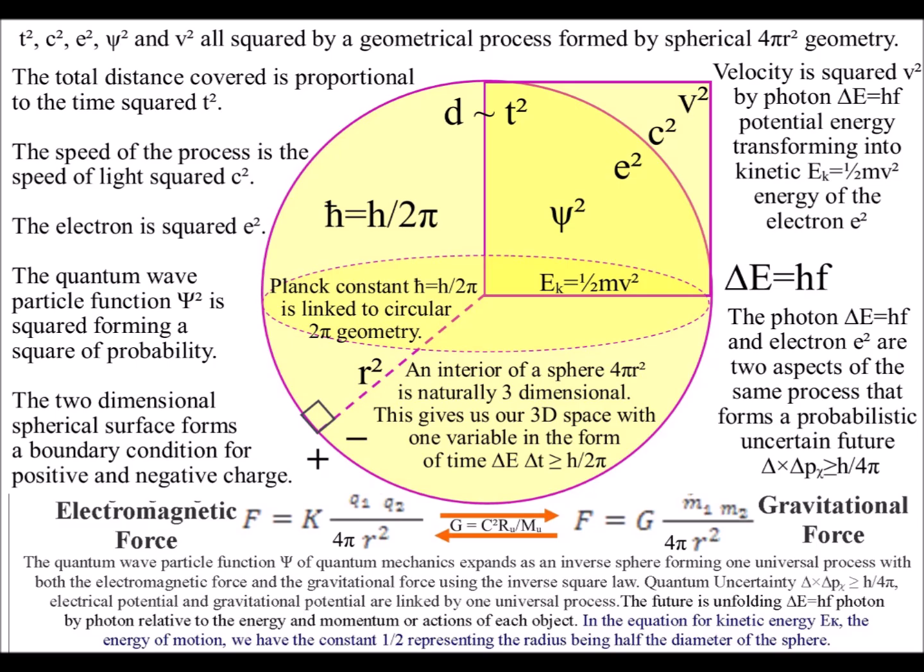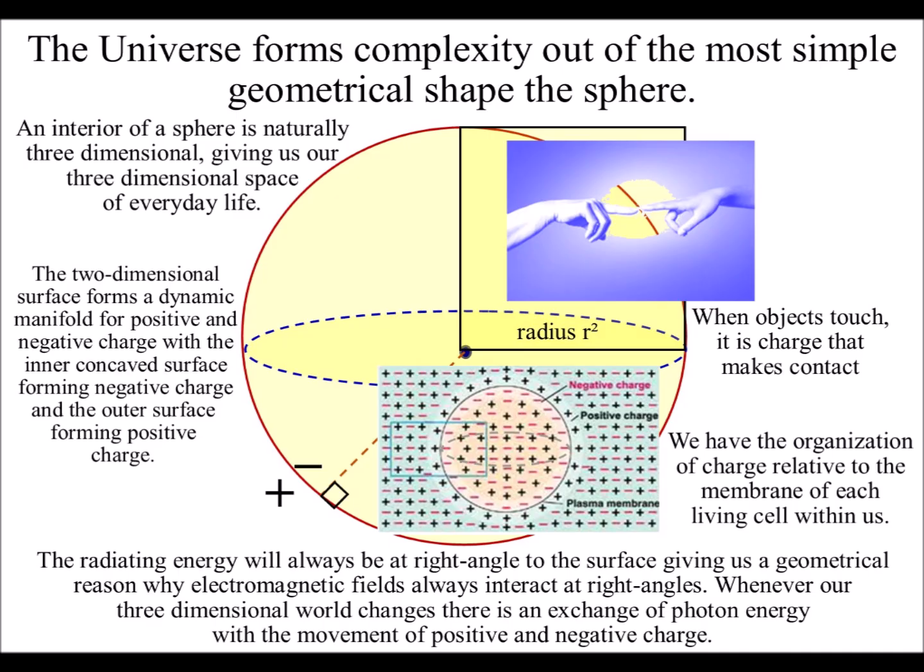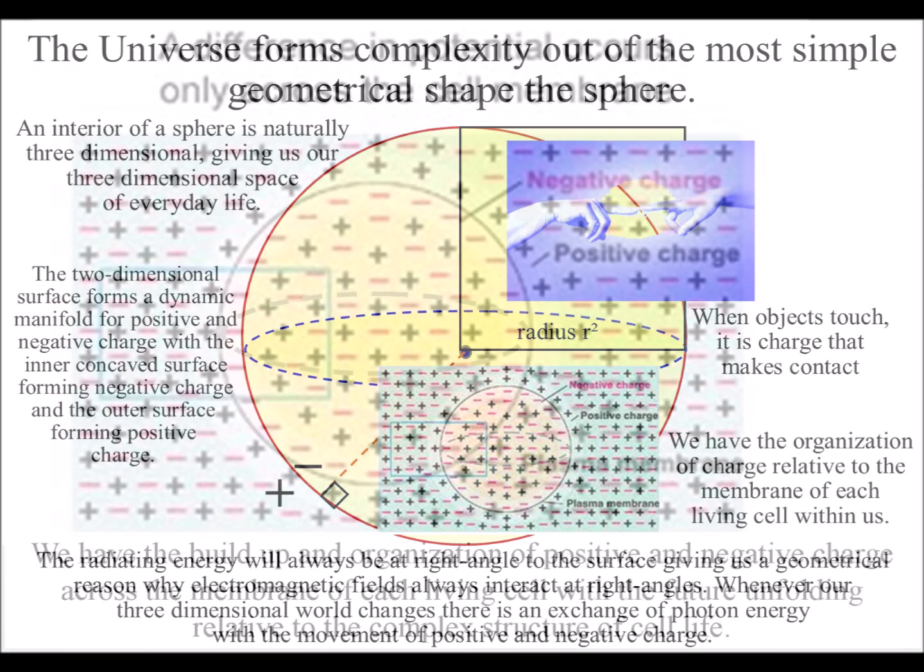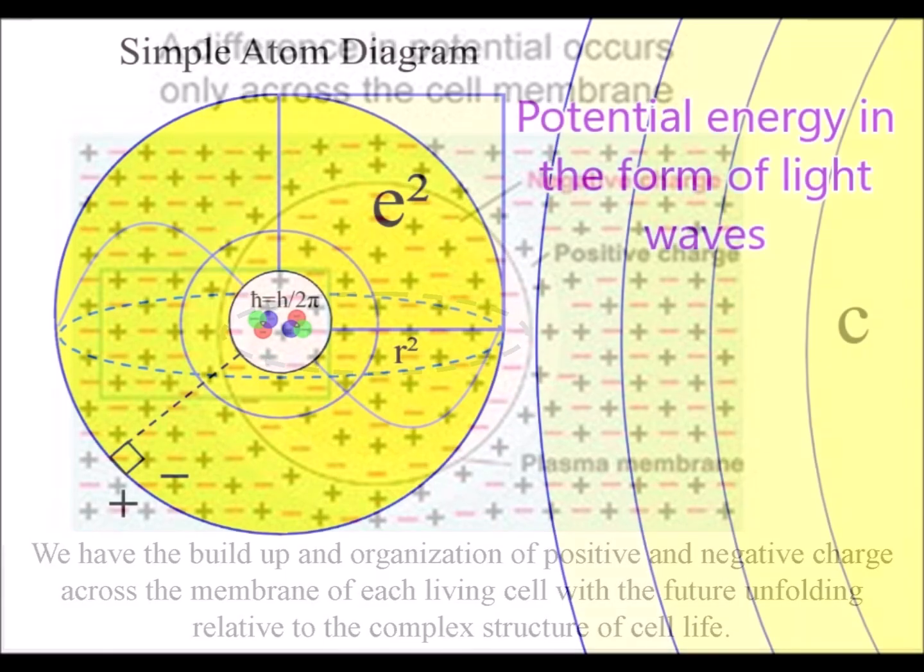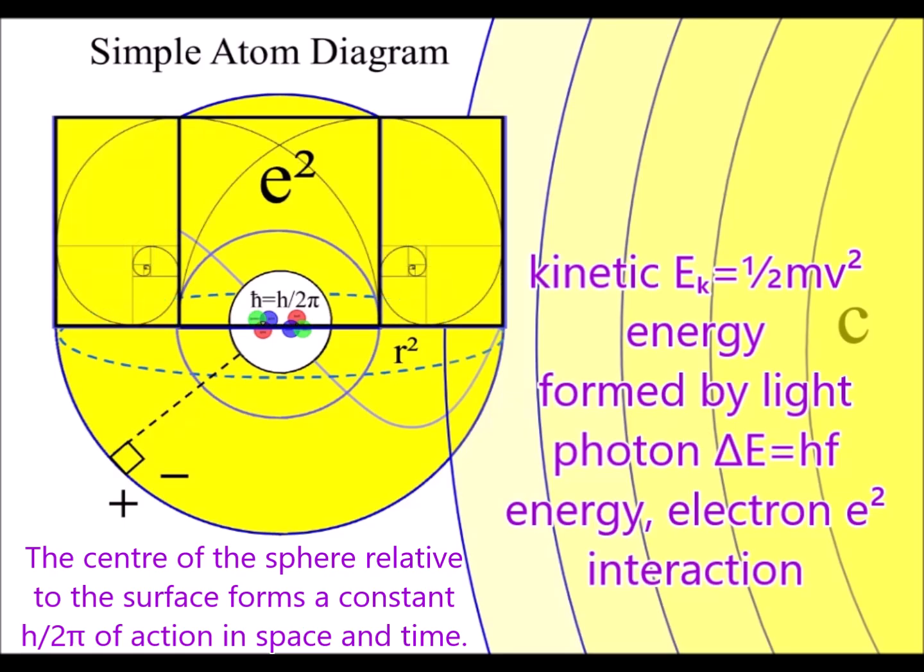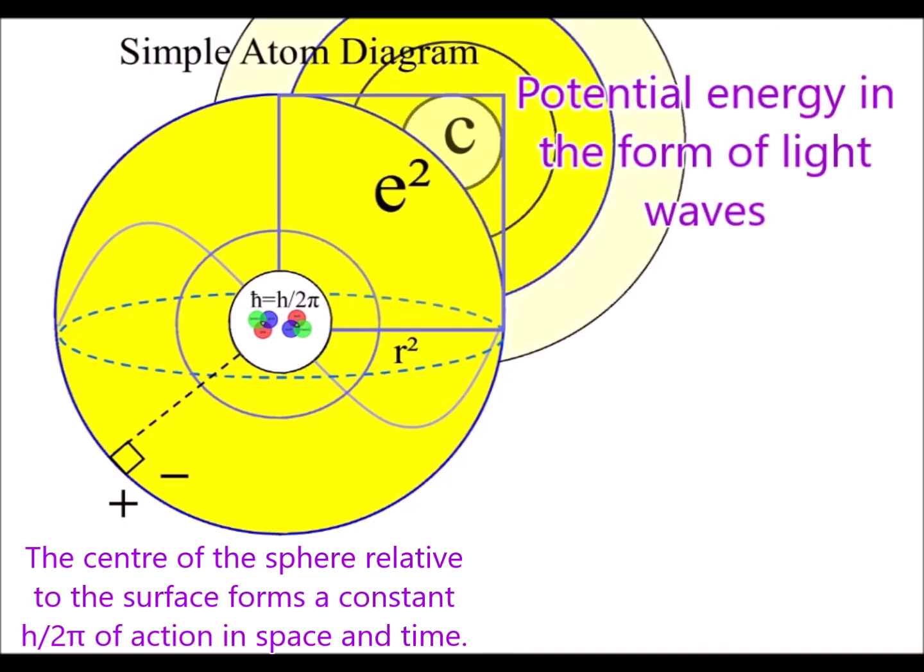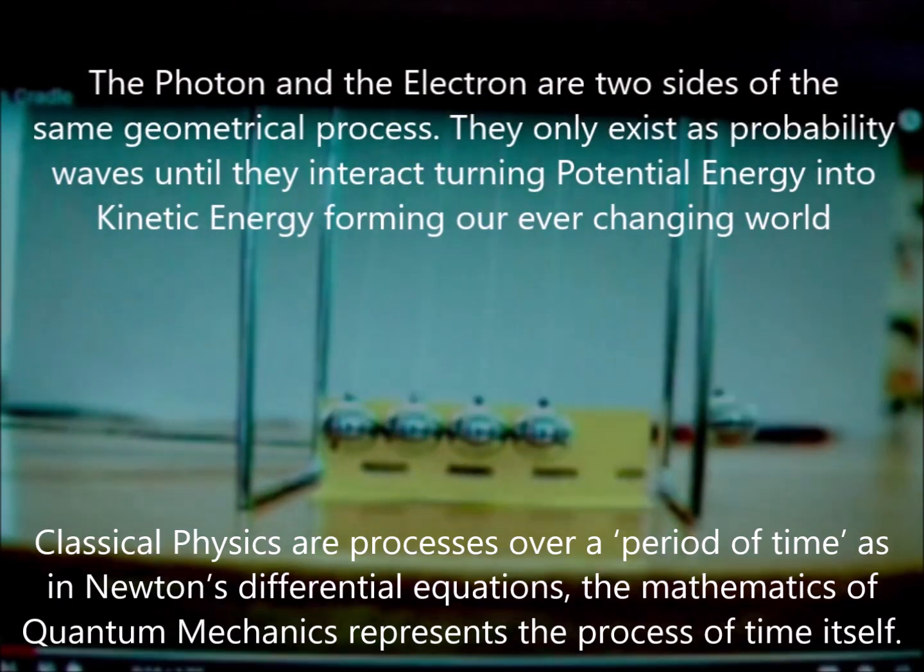Whenever our three-dimensional world changes, there is an exchange of photon energy with the movement of charge. When objects touch, it is charge that makes contact, and we have the organization of charge relative to the membrane of each living cell within us. Everything is based on a geometrical process of energy exchange, formed by light photon energy continuously transforming potential energy into the kinetic energy of matter in the form of electrons.